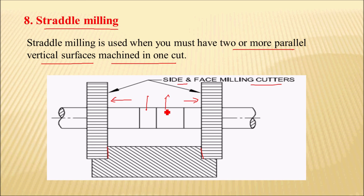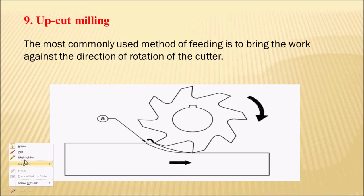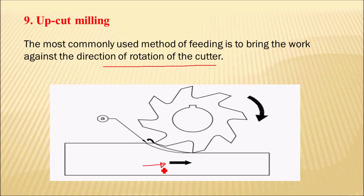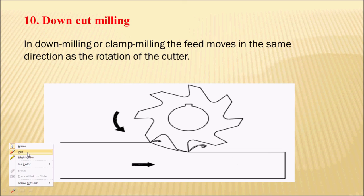Next is the upcut milling operation, which is the most commonly used method. In upcut milling, the workpiece is fed in the opposite direction to the rotation of the cutter. In downcut milling, the workpiece feed is in the same direction as the rotation of the cutter.